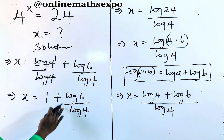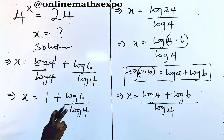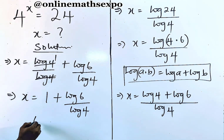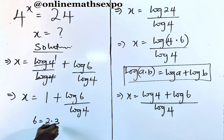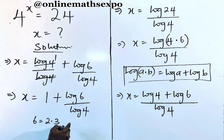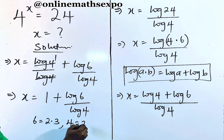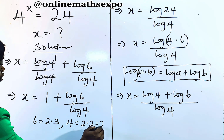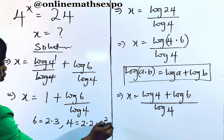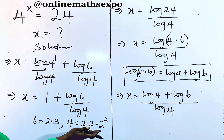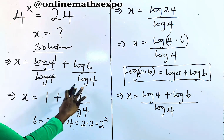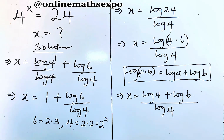Now we keep simplifying. We know that 6 is the same as 2 multiplied by 3, and also 4 is the same as 2 multiplied by 2, which is 2 squared.